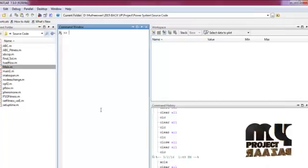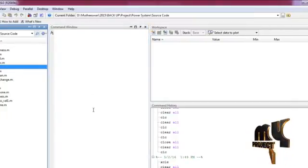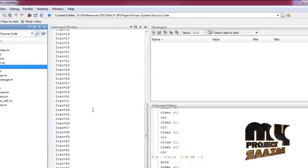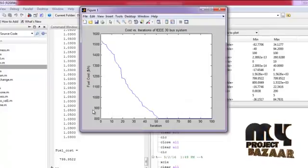Let me discuss the running procedure for our process. Select the main dot m file from the folder, write in the file, and run for executing this process. We perform the ABC algorithm for analyzing the fuel cost.